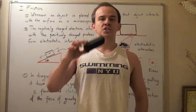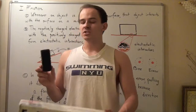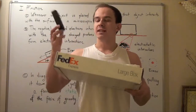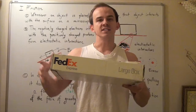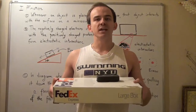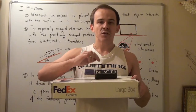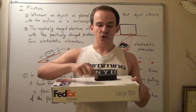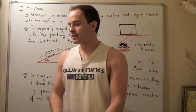Let's choose object number one to be an eraser, and object number two to be this box. Let's take object number one and place it on top of object number two, and zoom in on the microscopic level to see how the surface of the eraser interacts with the surface of the box.